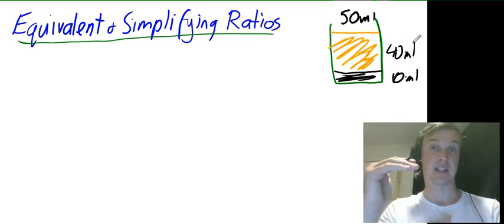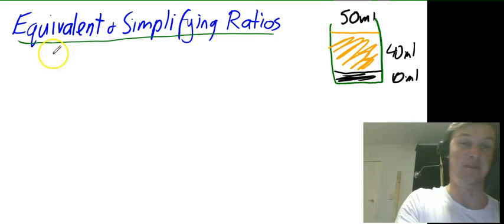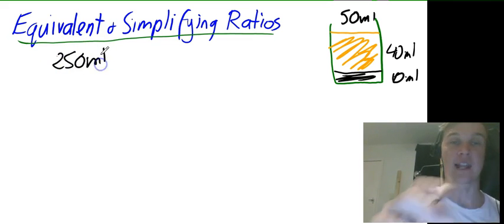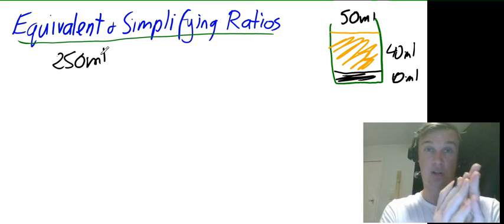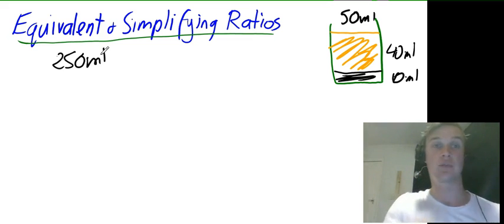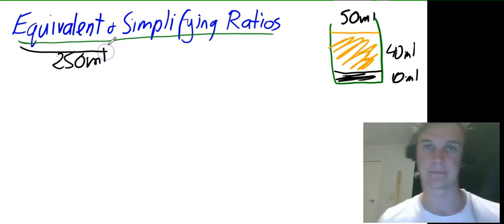What then happened is that I got a bigger glass and it was about 250 ml. Now I still wanted to have the same ratio of Milo to milk. So what I had to do is create an equivalent fraction. Now this is how you create an equivalent fraction.